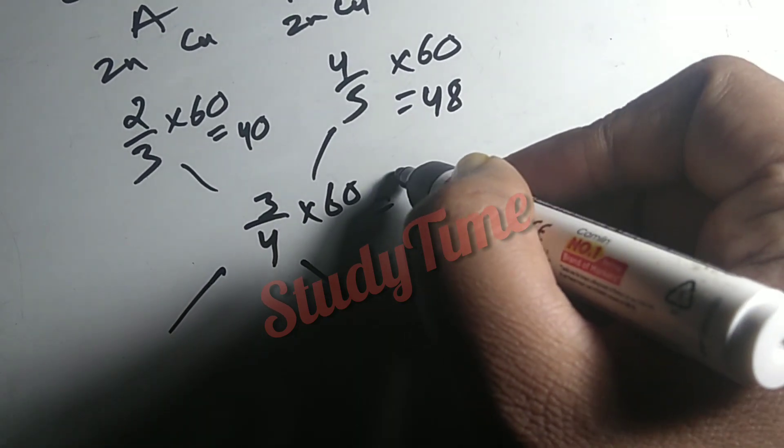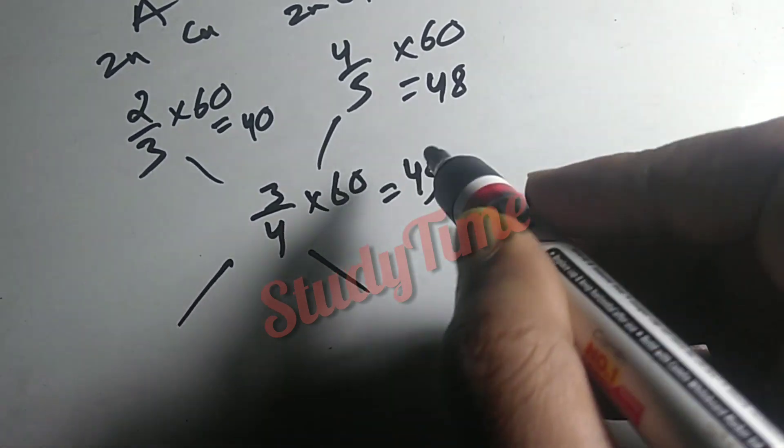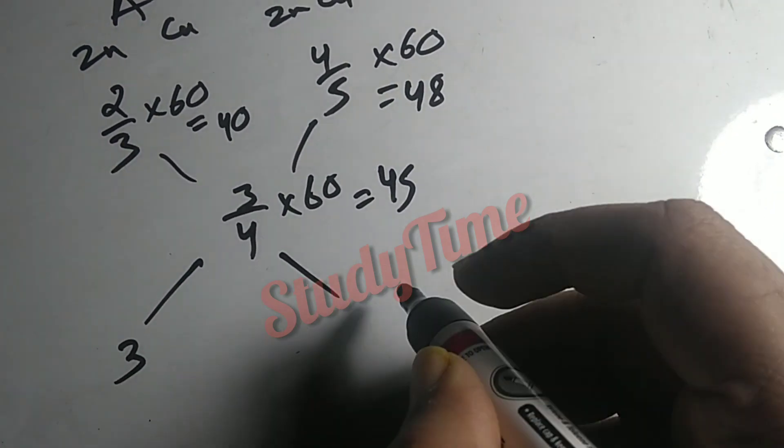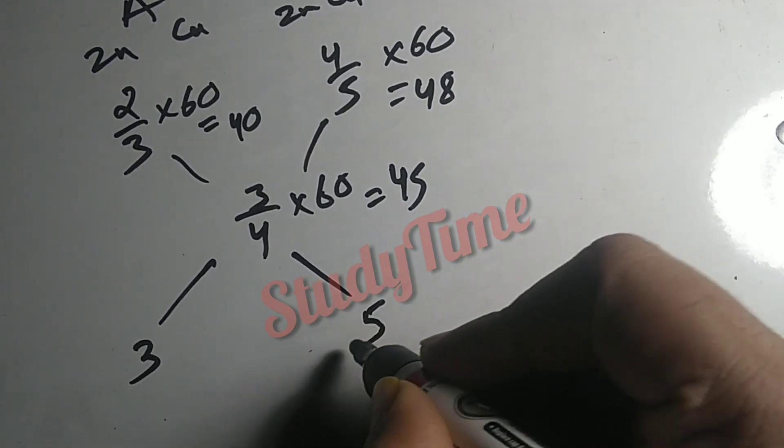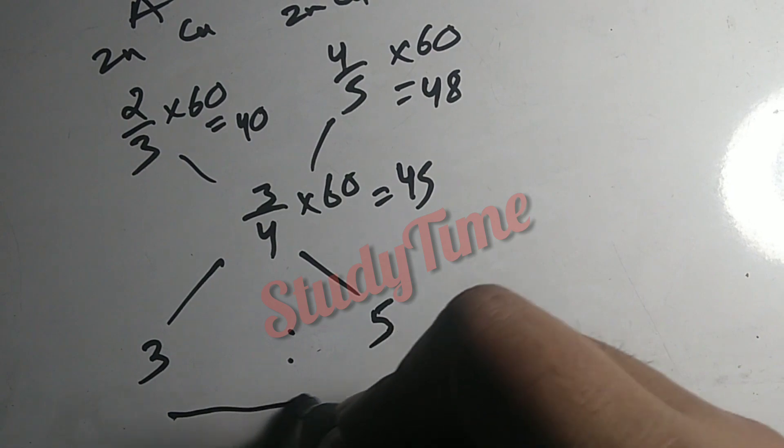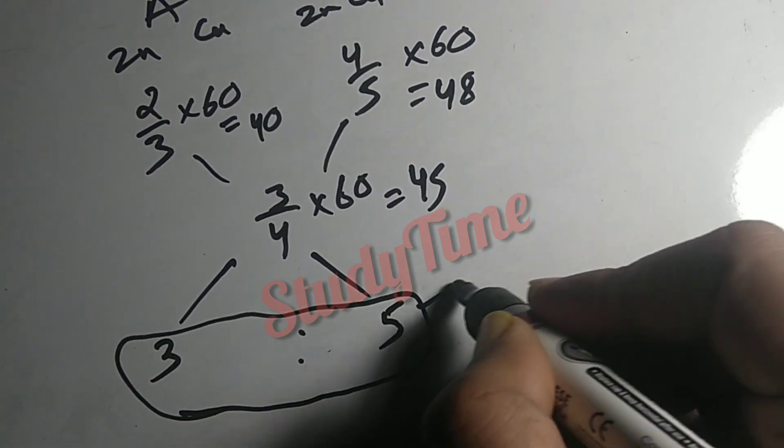How much is it? 45. 48 minus 45 is 3. 45 minus 40 is 5. 3 is to 5. This is our ratio.